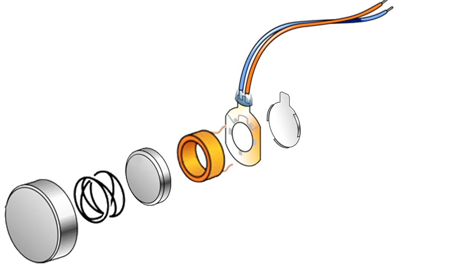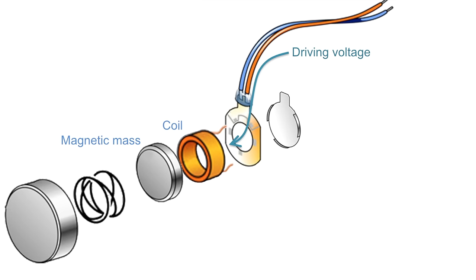Every smartphone has a tiny device called vibration motor. Inside the motor, it applies voltage to a coil that moves a magnetic mass to generate vibration.